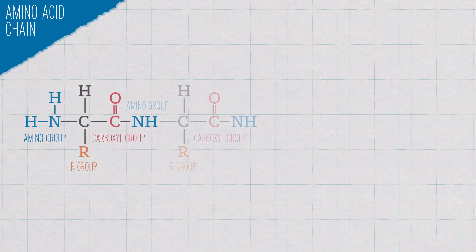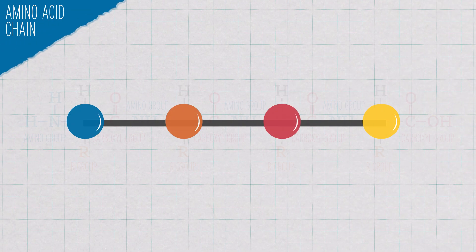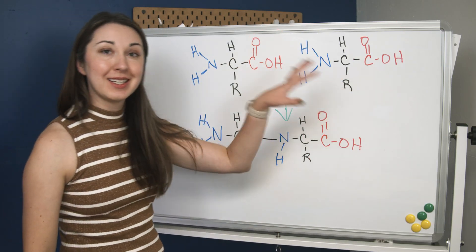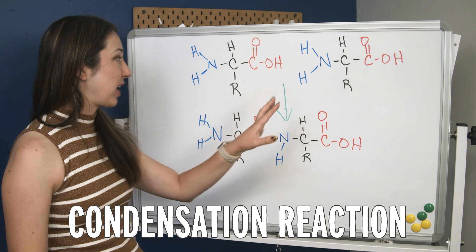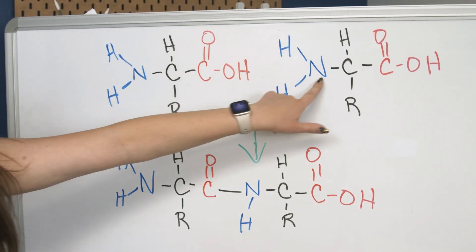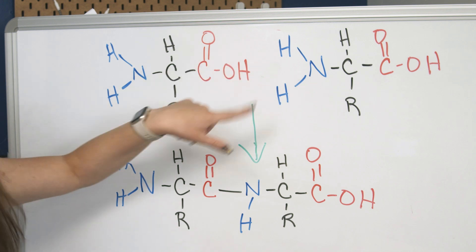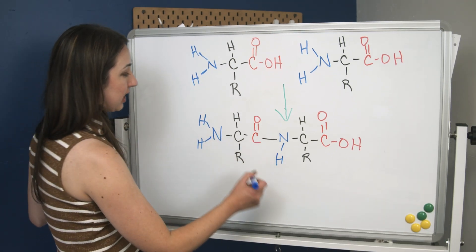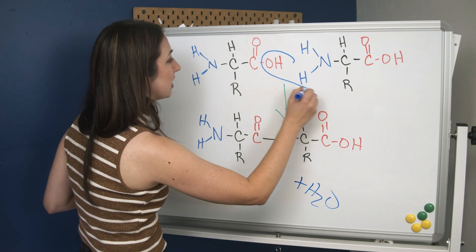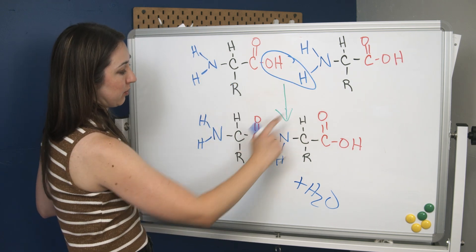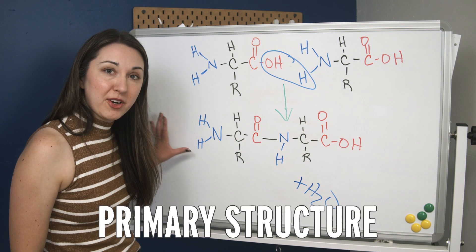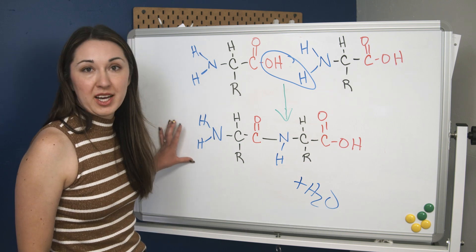Amino acids are all strung along in one big row like beads on a string, amino group to carboxyl group. Each amino acid is added through a condensation reaction where the carbon loses an OH group and the nitrogen loses an H group. You get a water molecule, and now this carbon is bound to this nitrogen. This is the protein's primary structure — the order of all its amino acids.